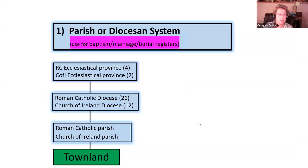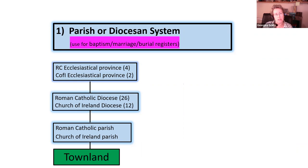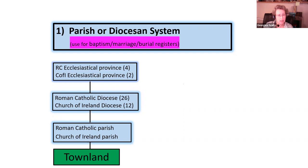Looking first at the parish or diocesan system — used for baptisms, marriages, and burial registers — the Roman Catholic Church has four ecclesiastical provinces subdivided into 26 dioceses, and the Church of Ireland has two provinces subdivided into 12 dioceses. These are further subdivided into Roman Catholic and Church of Ireland parishes respectively, with the townland at the very bottom tier.